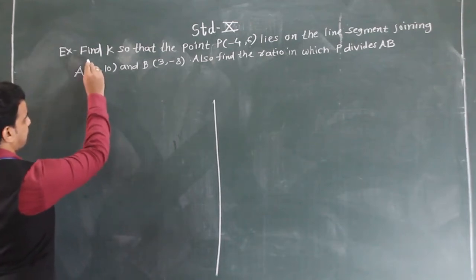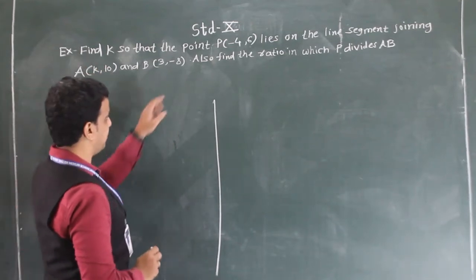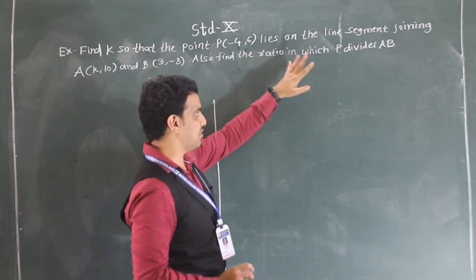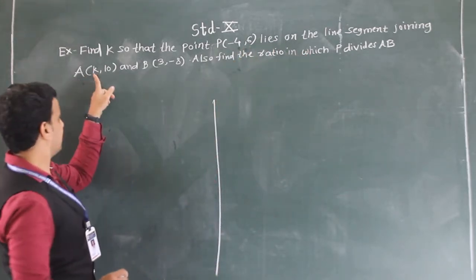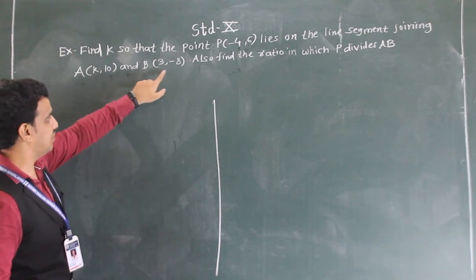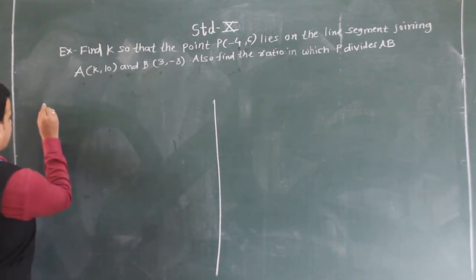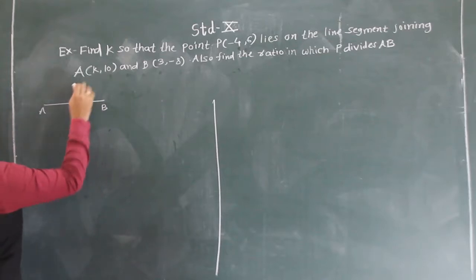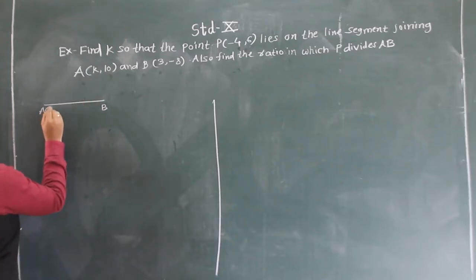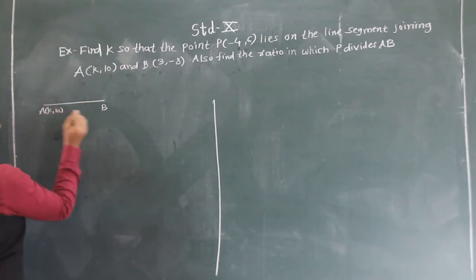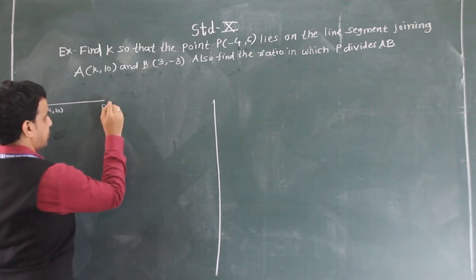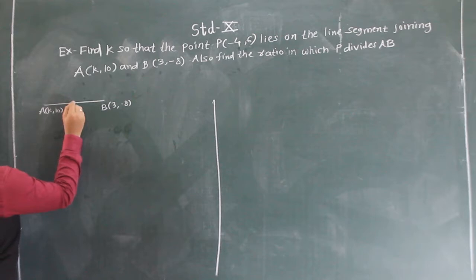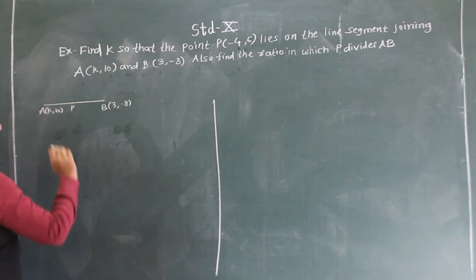The example is: find K so that the point P(-4, 6) lies on the line segment joining A and B. Here A and B are endpoints. Coordinates of A are given as (K, 10), coordinates of B are given as (3, -8), and point P divides line segment AB.